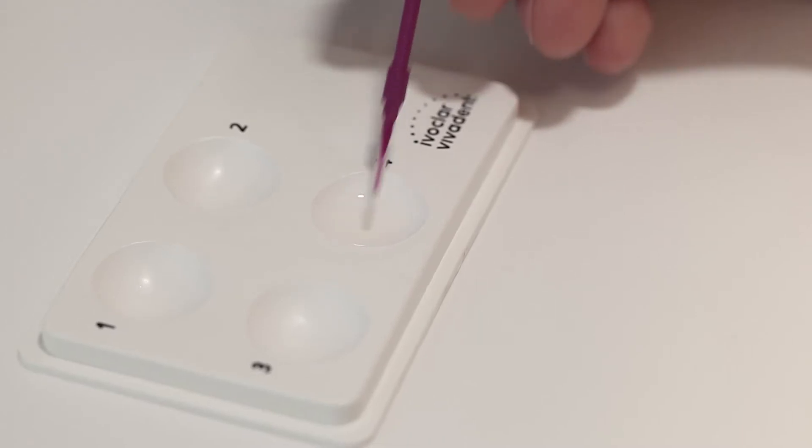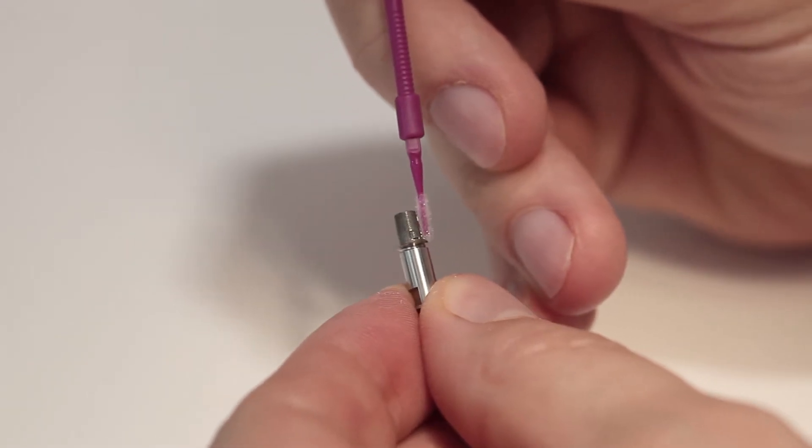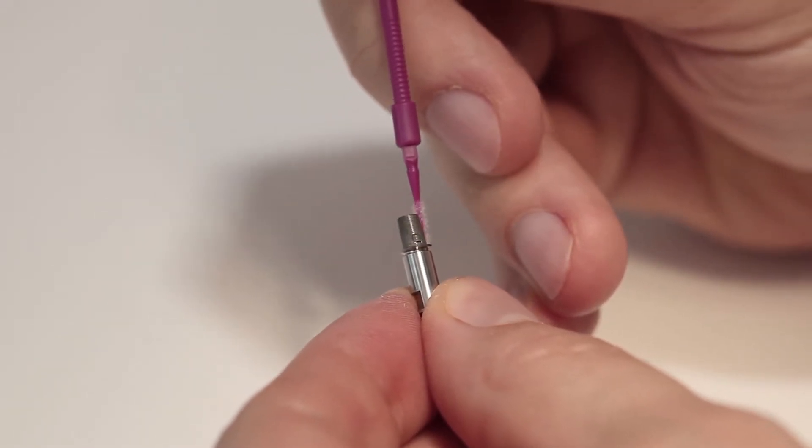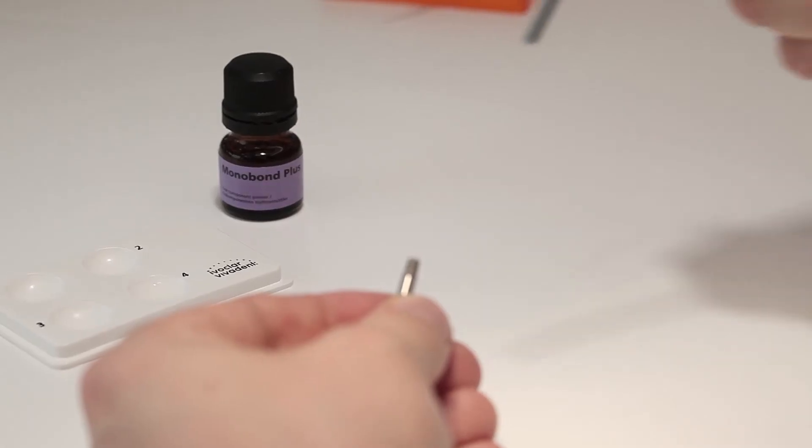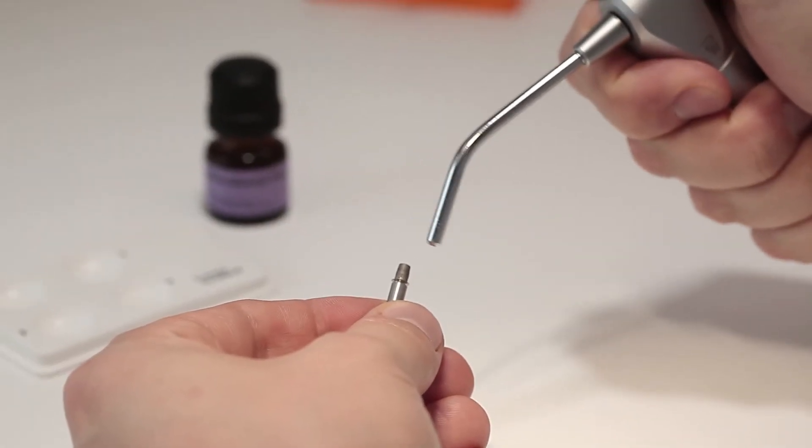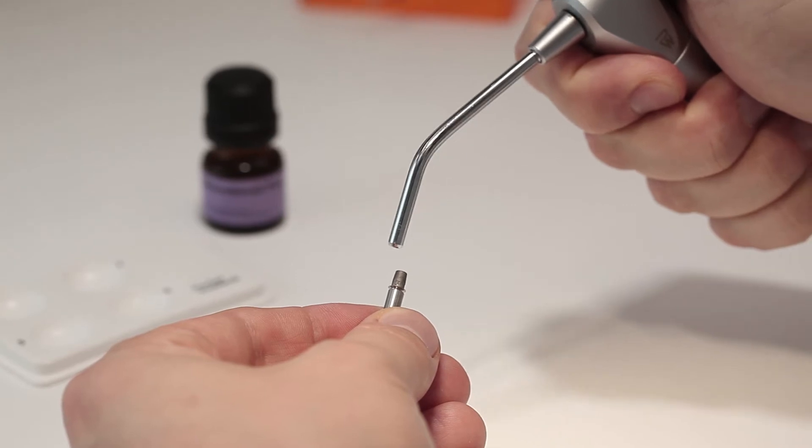Apply monobond plus bonding agent to the dry bonding surface of the tie base and allow to react for 60 seconds. Then evaporate any remaining excess with compressed air that is free of water and oil.